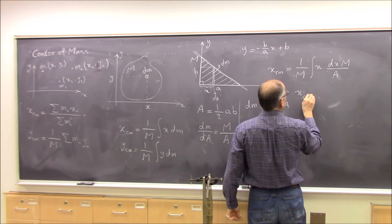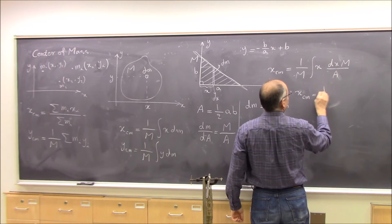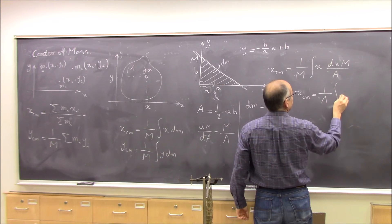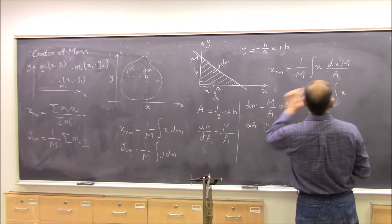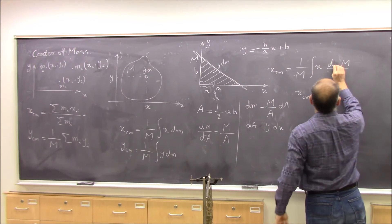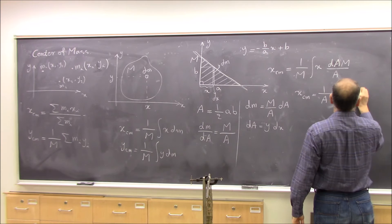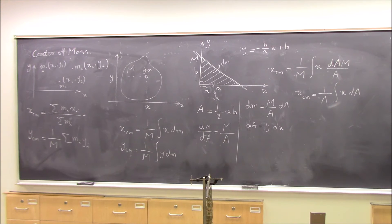So x of center of mass becomes 1 over A, integral of x da. So you see that there's no mass here. Instead of finding center of mass, you have just like finding center of the area. 1 over total area, then x times da is the same as, instead of saying 1 over total mass, x dm.